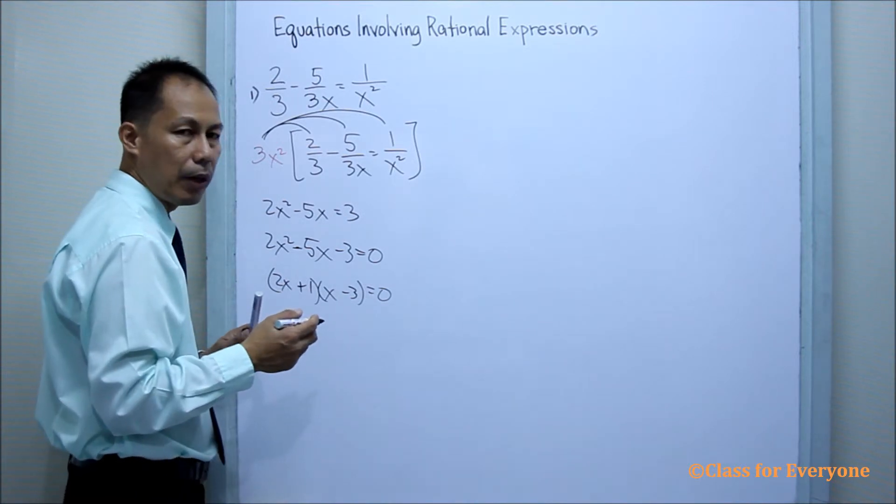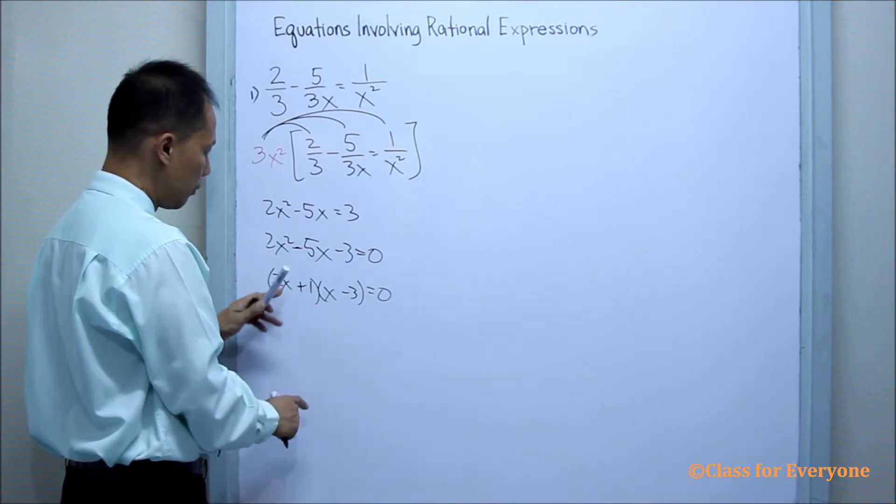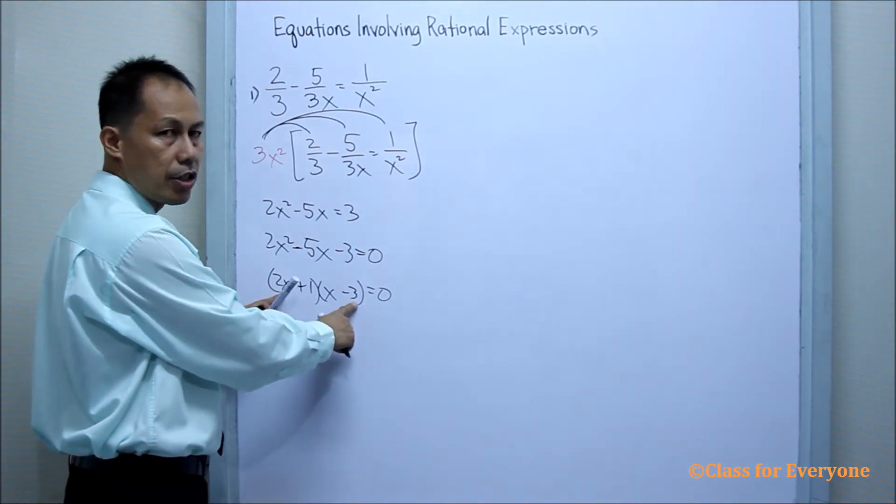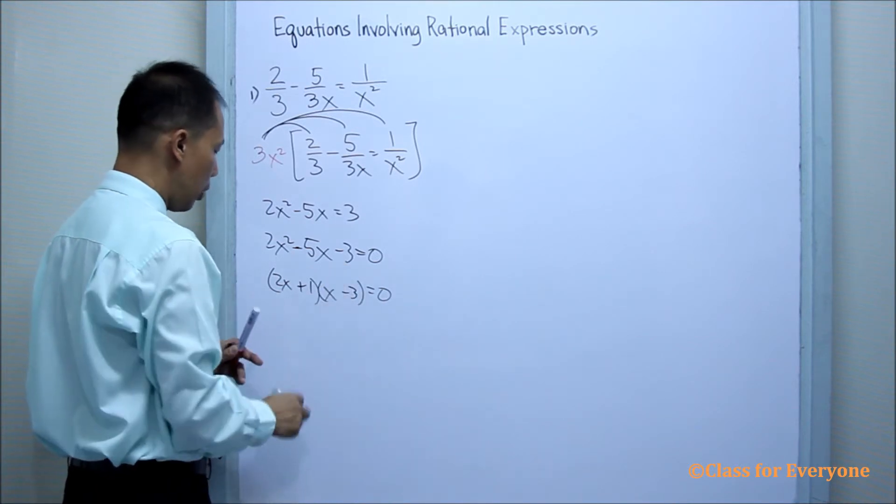To check if my factors are correct, use the foil. 2x times x is 2x squared. 2x times negative 3 is negative 6x. Plus x is negative 5x. 1 times negative 3 is negative 3.